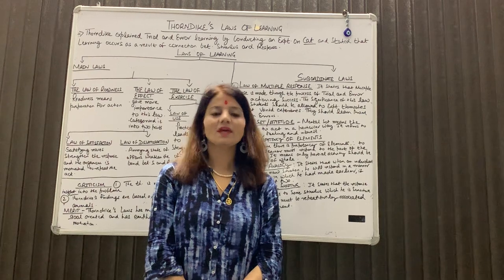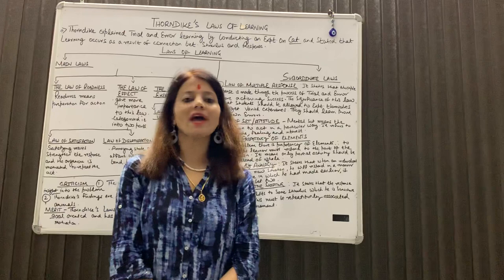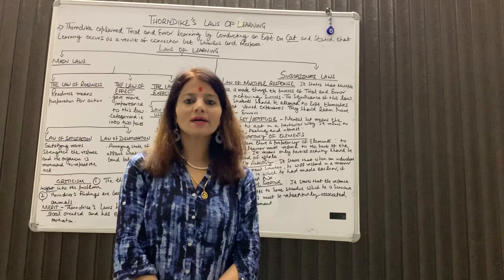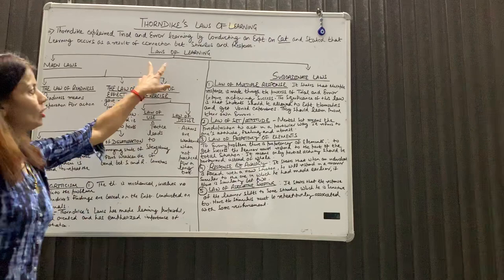Hello my dear students, my name is Dr. Deepti and I am continuing the topic theories of motivation. In my previous lecture, I discussed trial and error theory which was proposed by Thorndike. Thorndike conducted an experiment on a cat, and on the basis of that experiment he proposed several laws. Laws of learning according to Thorndike are categorized into two categories.